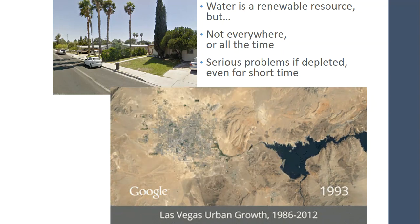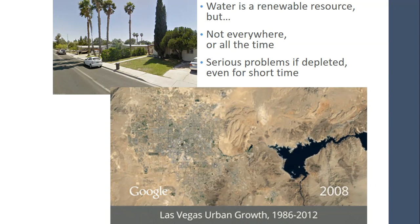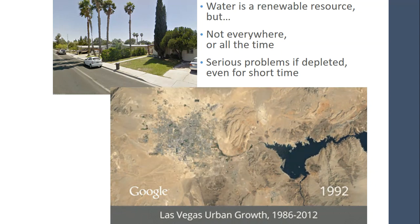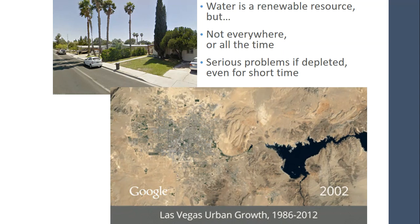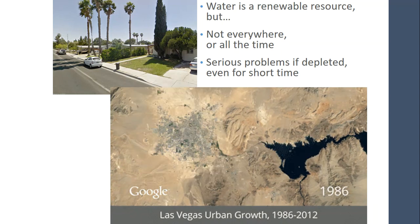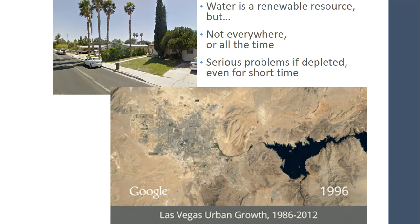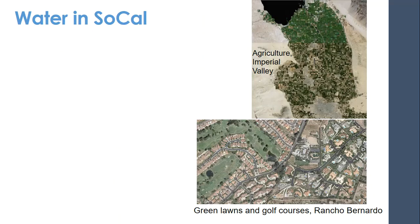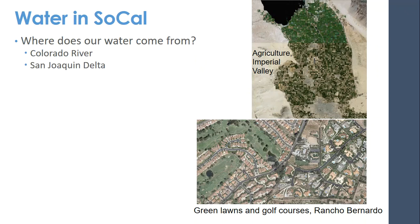This has happened in Southern California, where we have started to run out of water and have built a desalination plant. We have paid farmers east of San Diego to fallow their fields in order to get some of their water. In Southern California, our water comes from the Colorado River, the San Joaquin Delta and snowpack — particularly in the Sierras, which you watched a video about in the last module — and now also desalination.